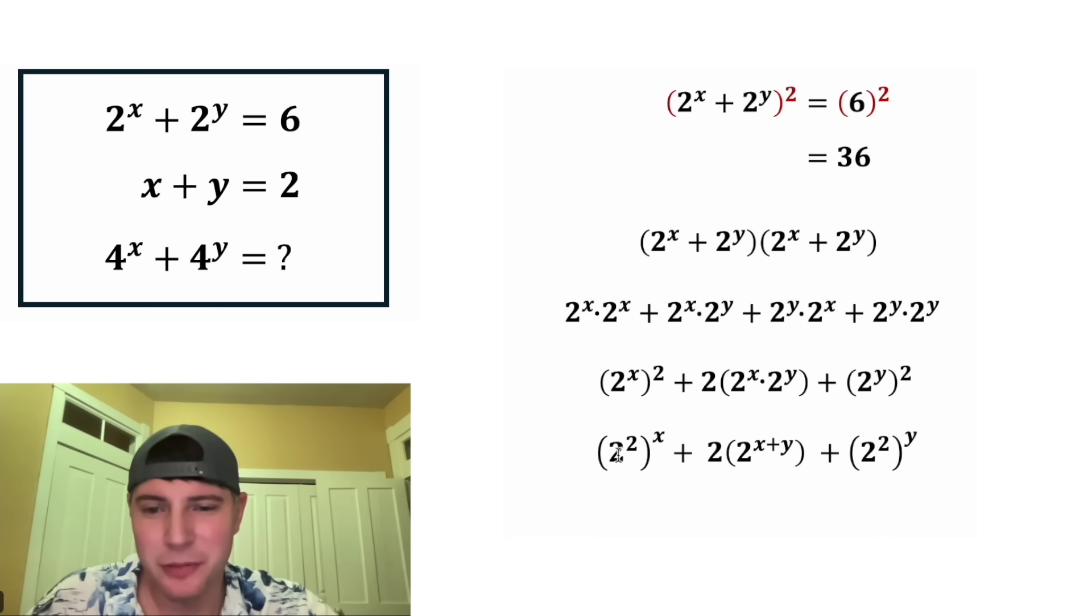So now for the first term, this 2 squared in the parentheses is equal to 4. And then for the middle term, let's copy it down. And then for the third term, this 2 squared in parentheses is 4. So this whole thing became 4 to the x plus 2 times 2 to the x plus y plus 4 to the y.